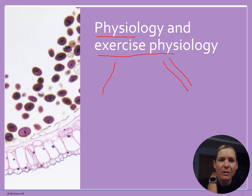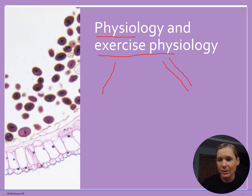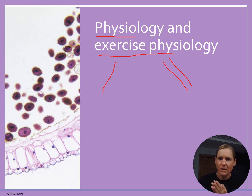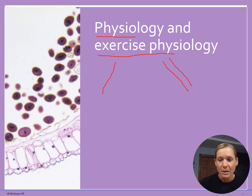Also within the realm of exercise physiology, we want to understand what's happening from an environmental perspective — for example, how we are affected by hot environments and humidity and how that impacts our ability to complete an exercise bout. We also want to understand physiological differences with special populations, such as working with young kids versus older athletes and how they respond differently to particular exercise stimuli.